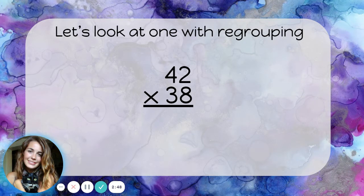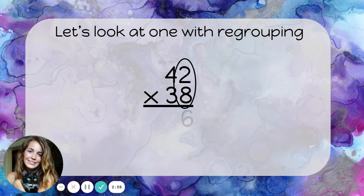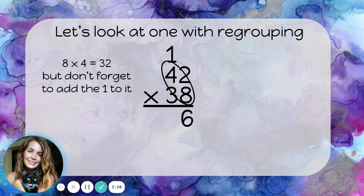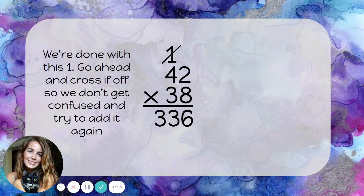Let's look at one with regrouping. We'll start the same way as before by multiplying forty-two times eight. Eight times two is sixteen. I know I can't put the whole sixteen down, so I have to carry the one. And then I do eight times four — that's thirty-two, but don't forget to add one more to it, making thirty-three. We're done with the one that we carried, so let's go ahead and cross it off so we don't get confused and try to add it again when we multiply our second digit.